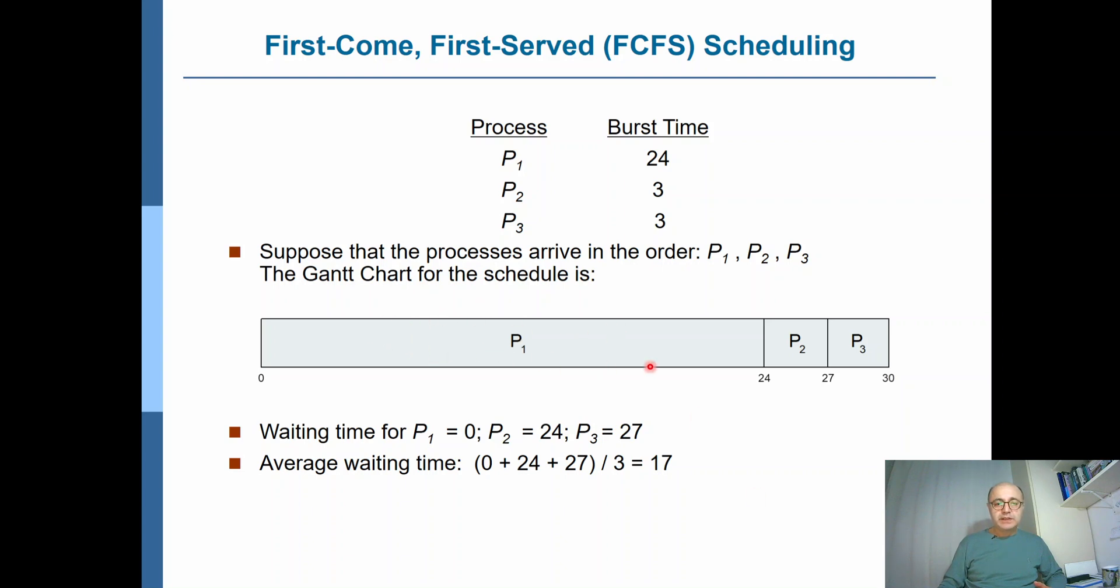So in this case, if you draw the Gantt chart, which is actually the figure you see here, which is actually a timing diagram, we see that P1 starts first because that's the first one to arrive, but it's a quite long process. It's 24 time units - whatever that time unit is, let's assume it's milliseconds - but from 0 to time 24, P1 would be executing.